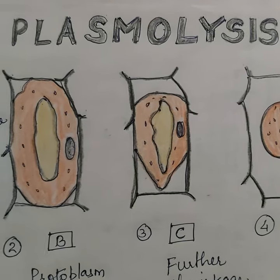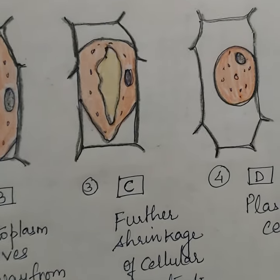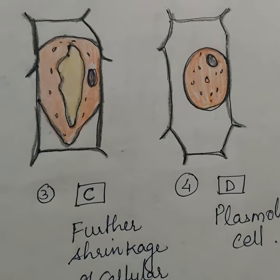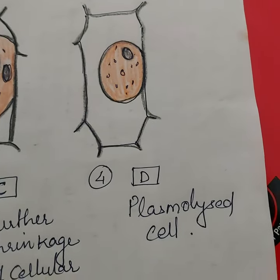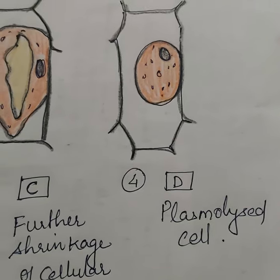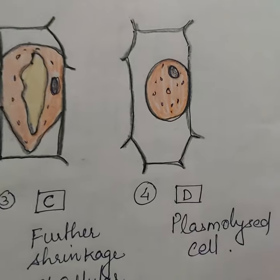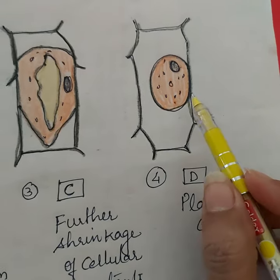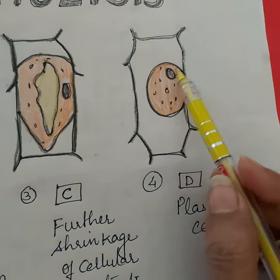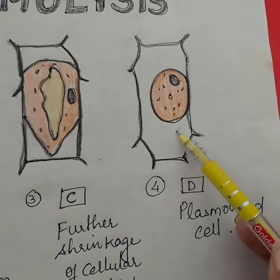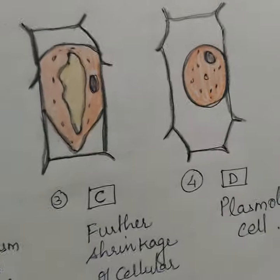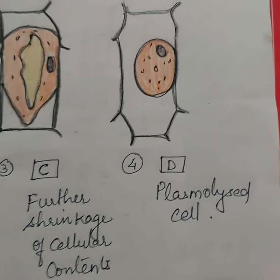Plasmolysis is the shrinkage of the plant cell where the cellular protoplasm moves away from the cell wall and concentrates in the center. This kind of a cell is called a plasmolysed cell. Now when I put a plasmolysed cell again in a hypotonic solution where the water is more, water will enter inside. The cytoplasm will start moving back to its original position and then it will regain its complete stature. This phenomenon is called deplasmolysis.